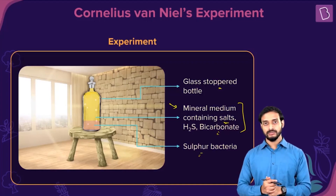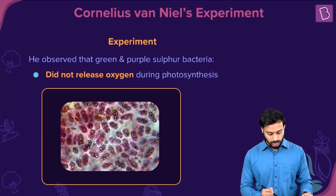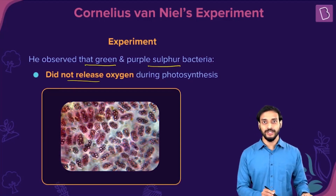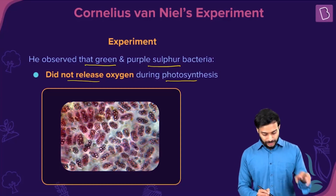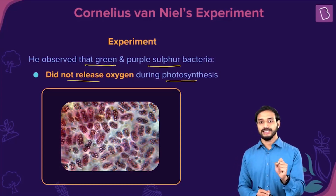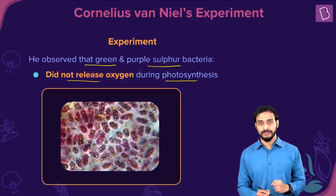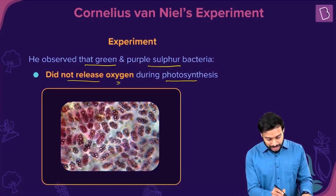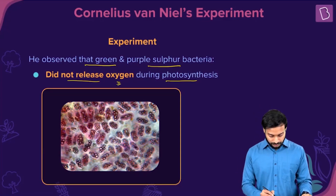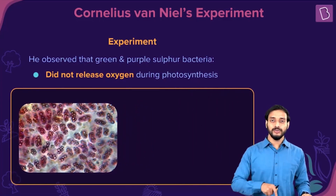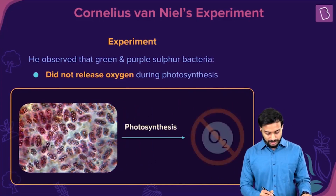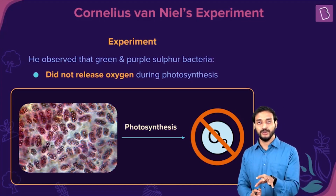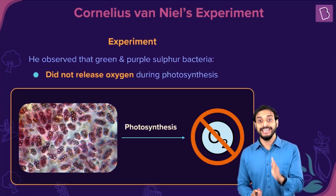He observed that the green and purple sulfur bacteria did not release oxygen during photosynthesis. They grew anaerobically — there is no oxygen, and they are not releasing oxygen either. In the presence of carbon dioxide and light, they did not release oxygen. They are photosynthesizing, but oxygen is not released.